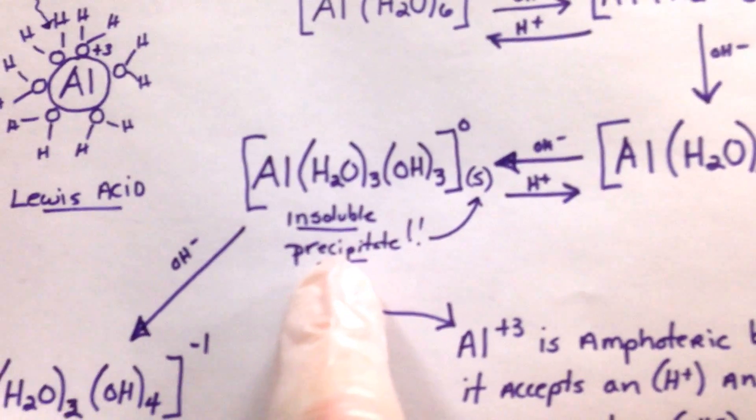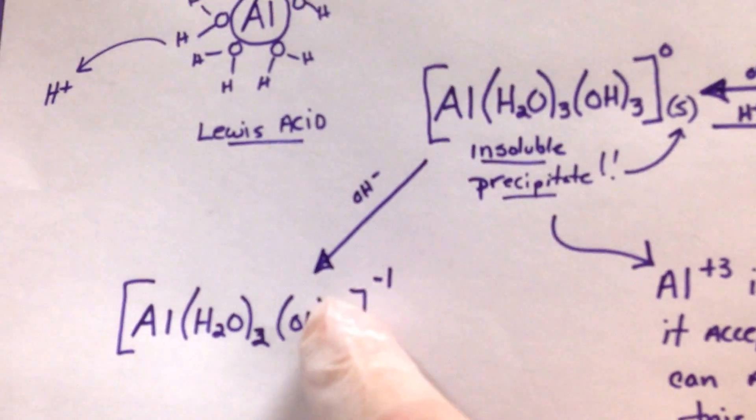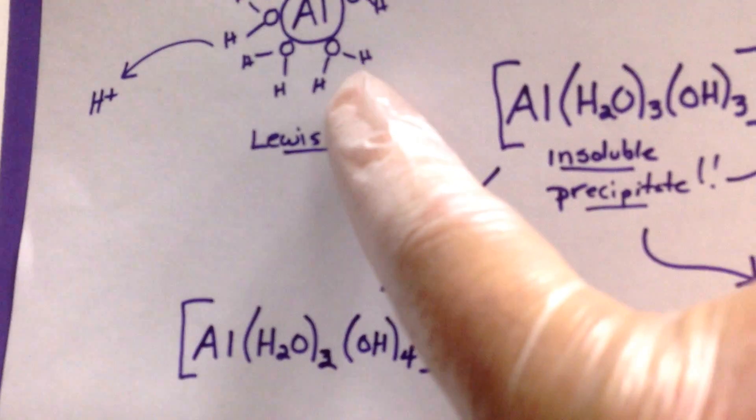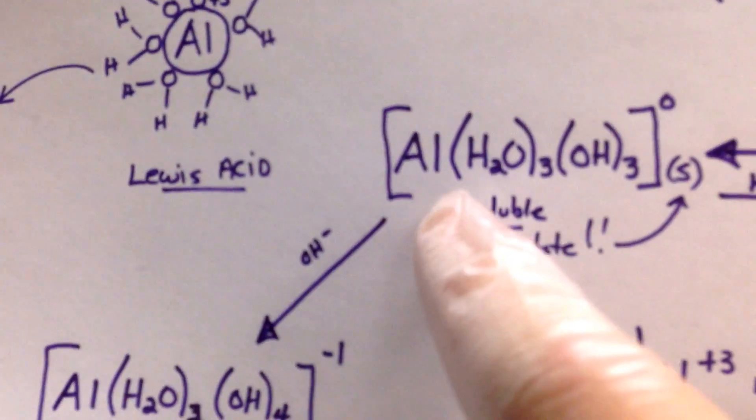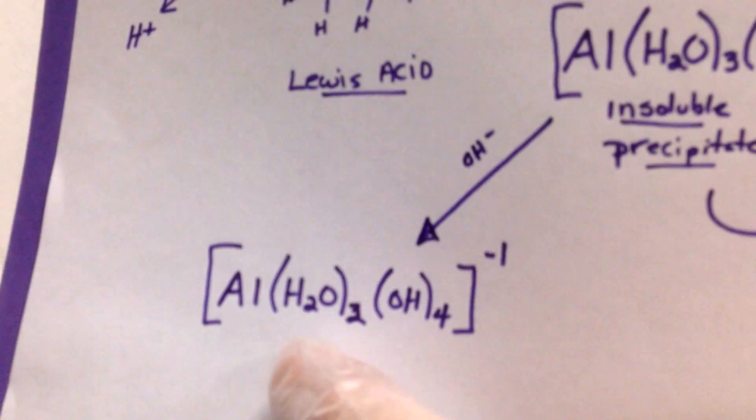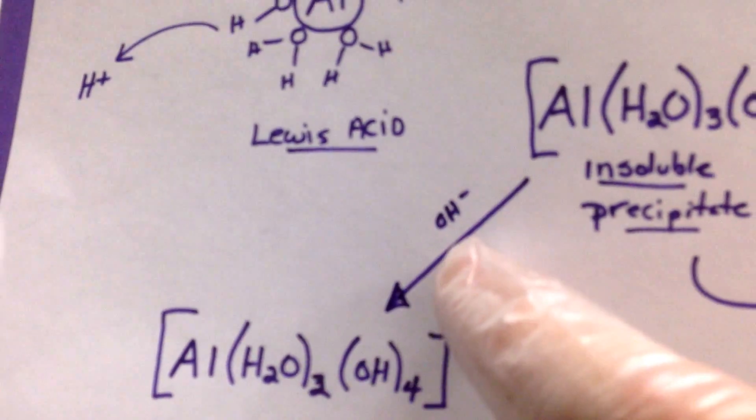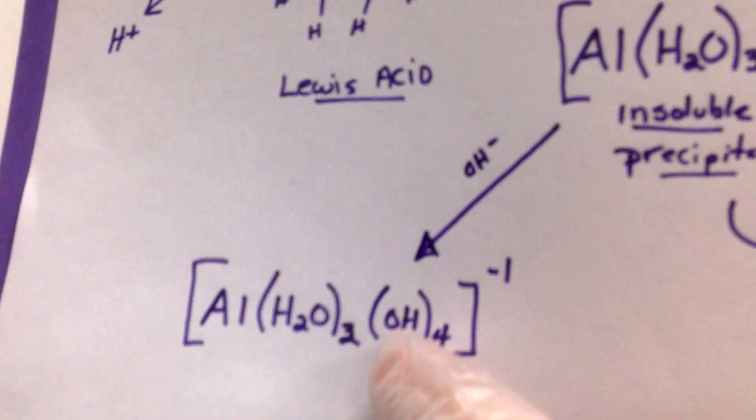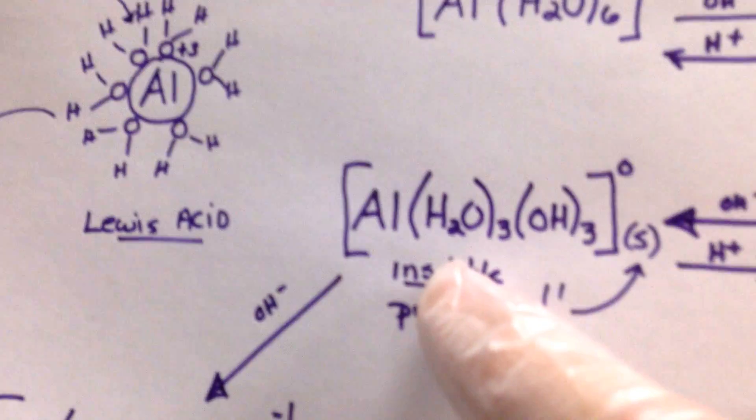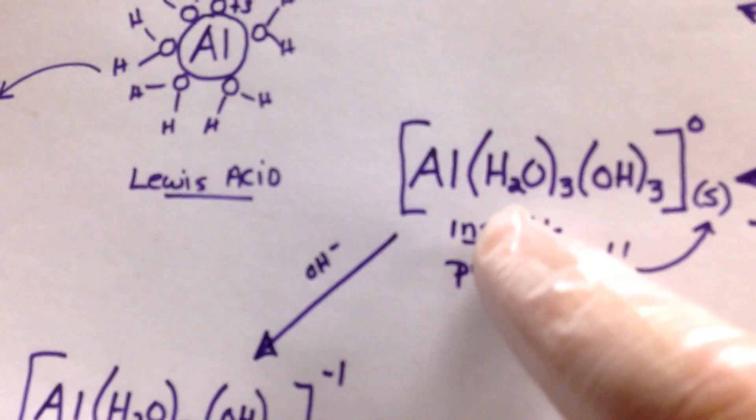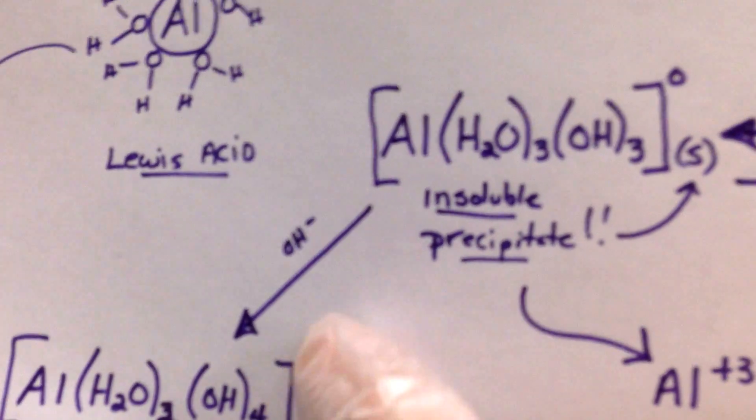When I have my insoluble precipitate, here's the cool thing. If I add more hydroxides, I could yank off another H off of my complex ion and make it negative one by pulling one more. Notice H2O3 becomes H2O2. By yanking one more H off, I make four hydroxides. Where it was once zero is now negative one. I can add more base to this to make it dissolve.